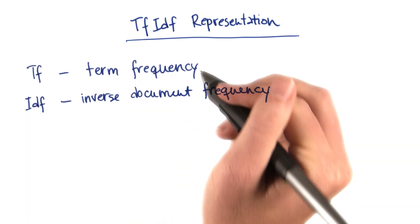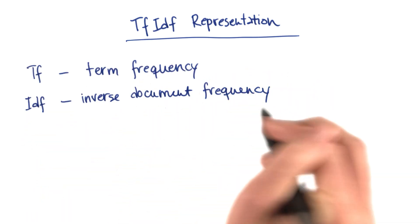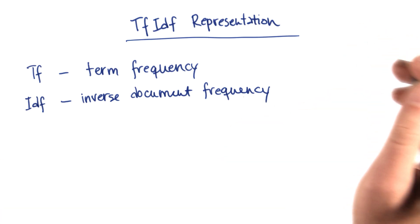TF stands for term frequency. IDF stands for inverse document frequency. And the rough idea is this.